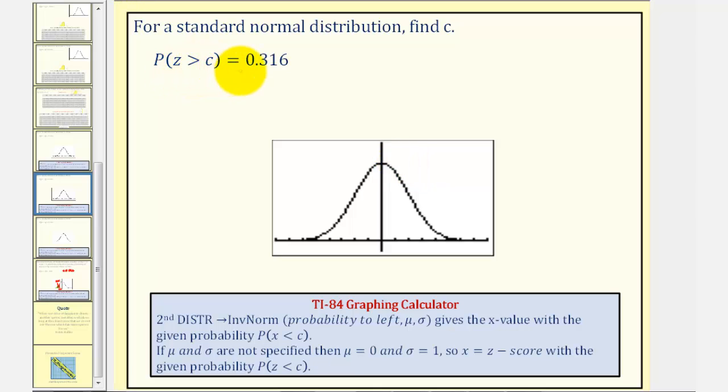And since the area to the right is less than 0.5, the Z-score will be positive. So let's say the Z-score is maybe somewhere in here, where if Z equals C, the probability of Z being greater than C is equal to 0.316, which would be the area to the right, or this area here.